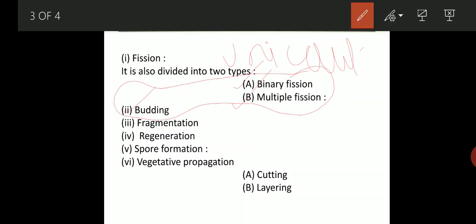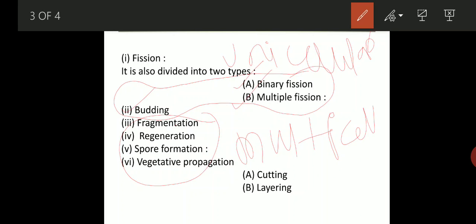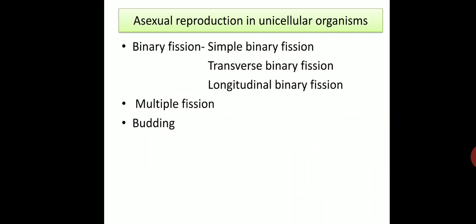The methods performed in multicellular organisms are fragmentation, regeneration, spore formation, and vegetative propagation. These four methods perform in multicellular organisms. In today's class, we are going to study the methods of reproduction in unicellular organisms.